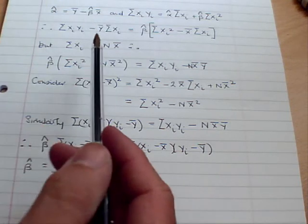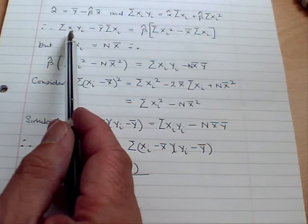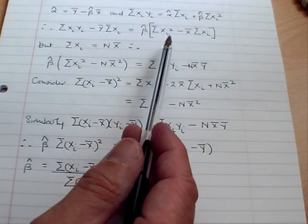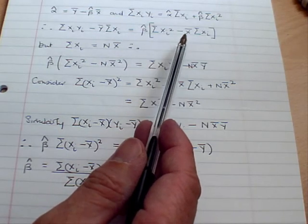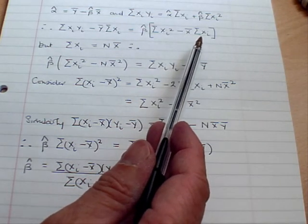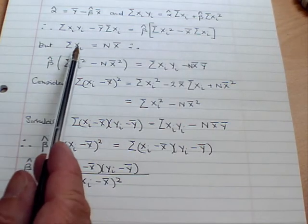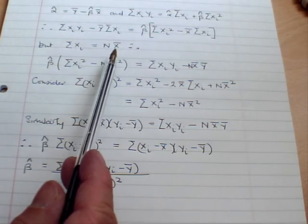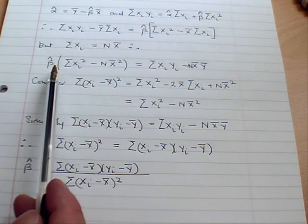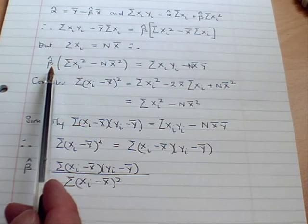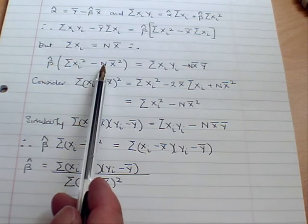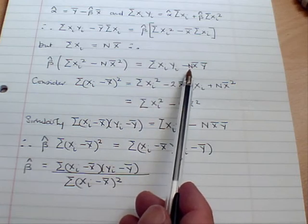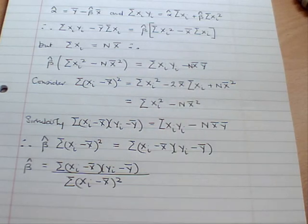First of all, substituting for alpha hat, we get the following equation. Sum of xi yi minus y bar sum of xi equals beta hat times the sum of xi squared minus x bar sum of xi. But we note that the sum of xi is just equal to n, the number of observations, times the mean of x, x bar. Therefore, we can simplify this a bit and write this as beta hat sum of xi squared minus n x bar squared equals sum of xi yi minus n x bar y bar.